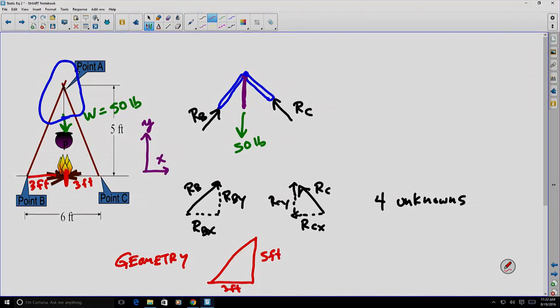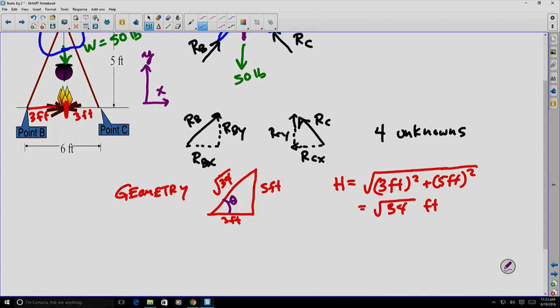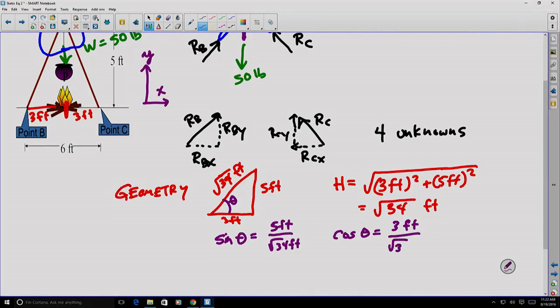If I use Pythagorean theorem, A² + B² = C², I can see that the hypotenuse is equal to the square root of 3² + 5², which gives me √34 feet. That means my relationships with this angle - I can use my trig relationships to recognize that sin θ equals 5/√34, and cos θ equals 3/√34. In both cases, the feet units cancel out.